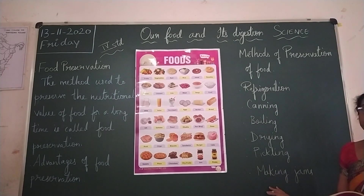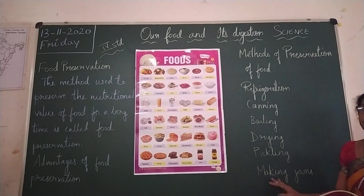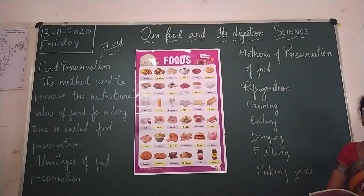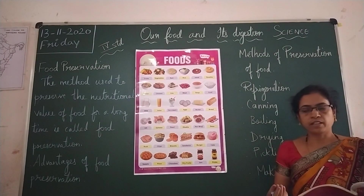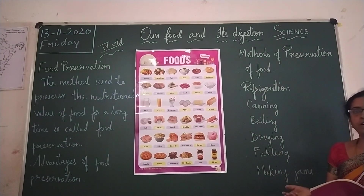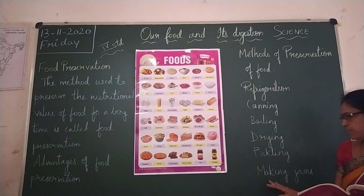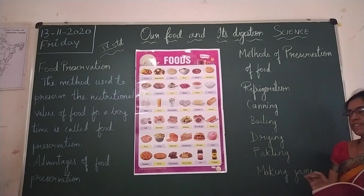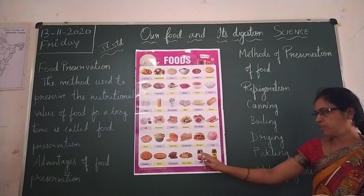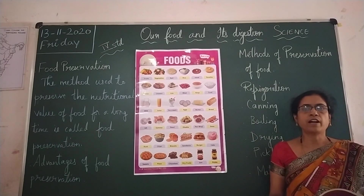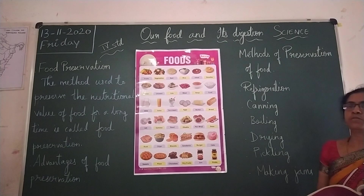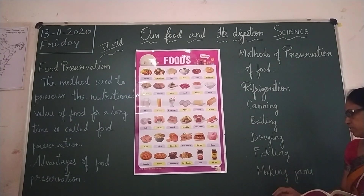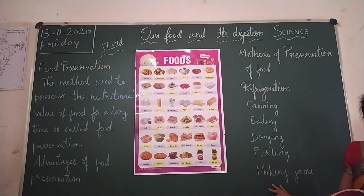Next is jams. Most fruits are made into jams by adding sugar. Excess sugar acts as a preservative, similar to salt — it prevents microbes from growing. You can see the jam here — many types of fruits are used to make jam, and excess sugar is added to preserve the food.